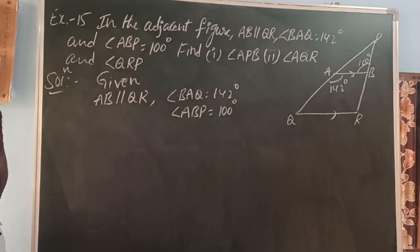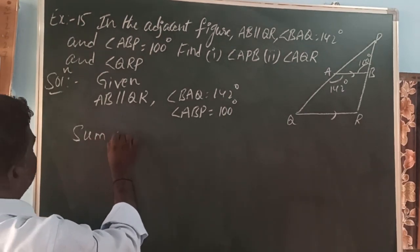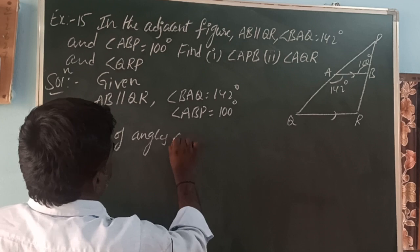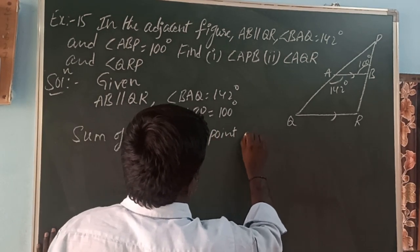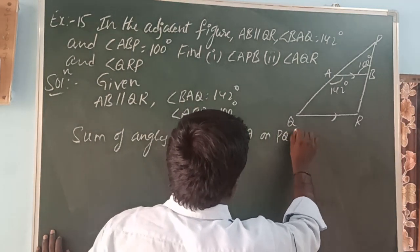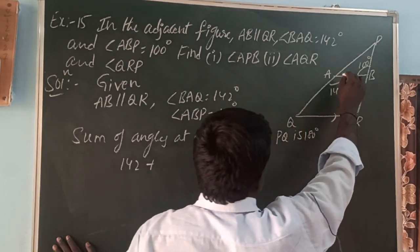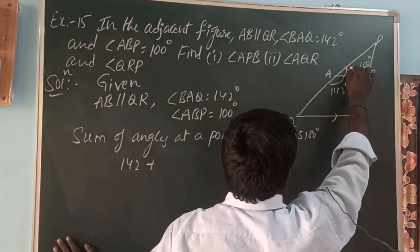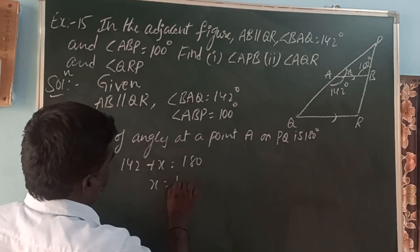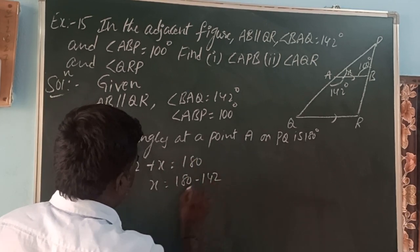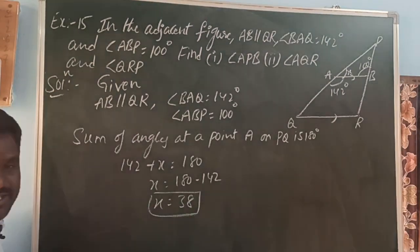The sum of angles at a point on a line is 180 degrees. The sum of angles at point A on PQ is 180 degrees. That is, 142 plus X is equal to 180. X is equal to 180 minus 142, so X is equal to 38 degrees.